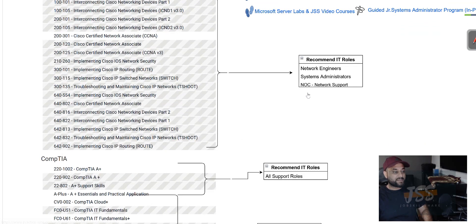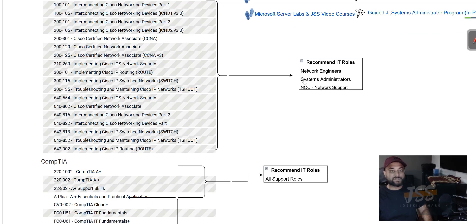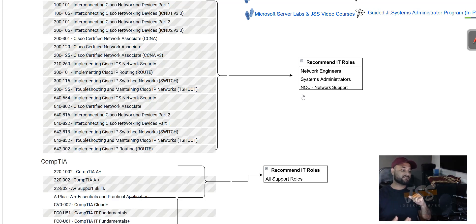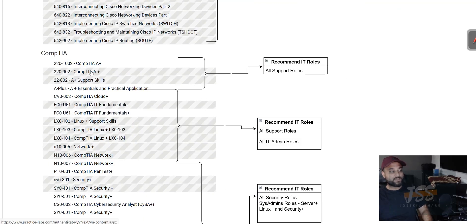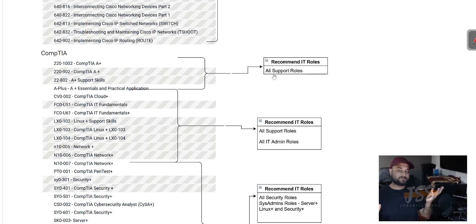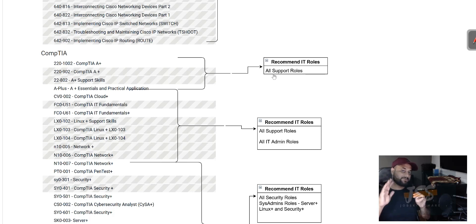The labs on the left side are designed for network engineers, systems administrators, and NOC/network support. Under CompTIA we say 'all support roles' — IT support, desktop support, user support, technician. These are all support-level, not sysadmin or engineering level. Network Plus comes under support too because it's still basics and fundamentals. Cloud fundamentals also falls under support.